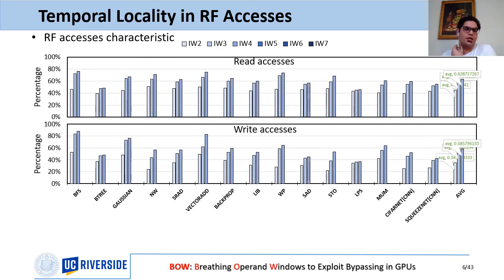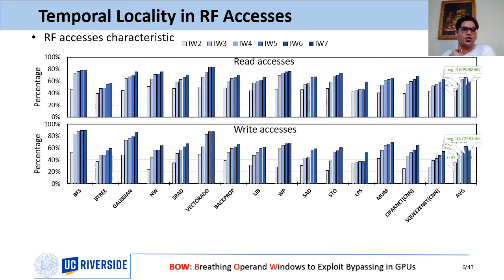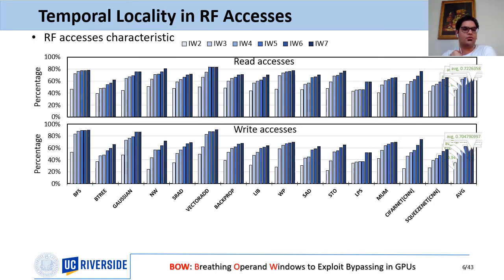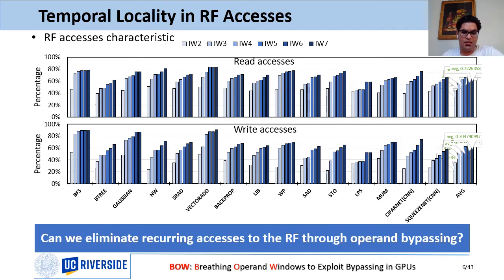Beyond a window size of three instructions, the reuse opportunity continues to increase slowly, reaching over 70% with an instruction window of seven. So the question is: can we eliminate these recurring accesses to the register file through operand bypassing? The answer is yes, and now I will talk about our technique.